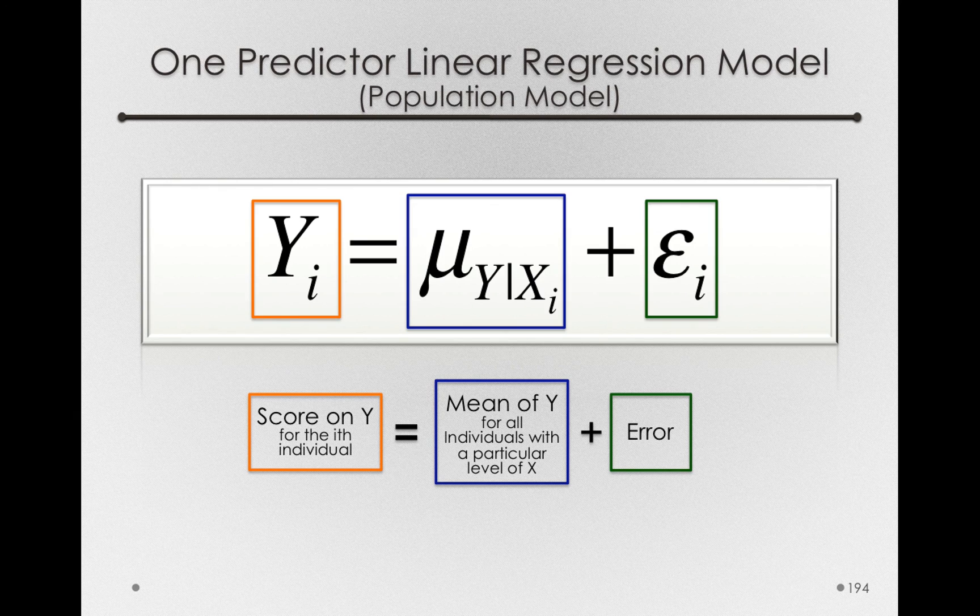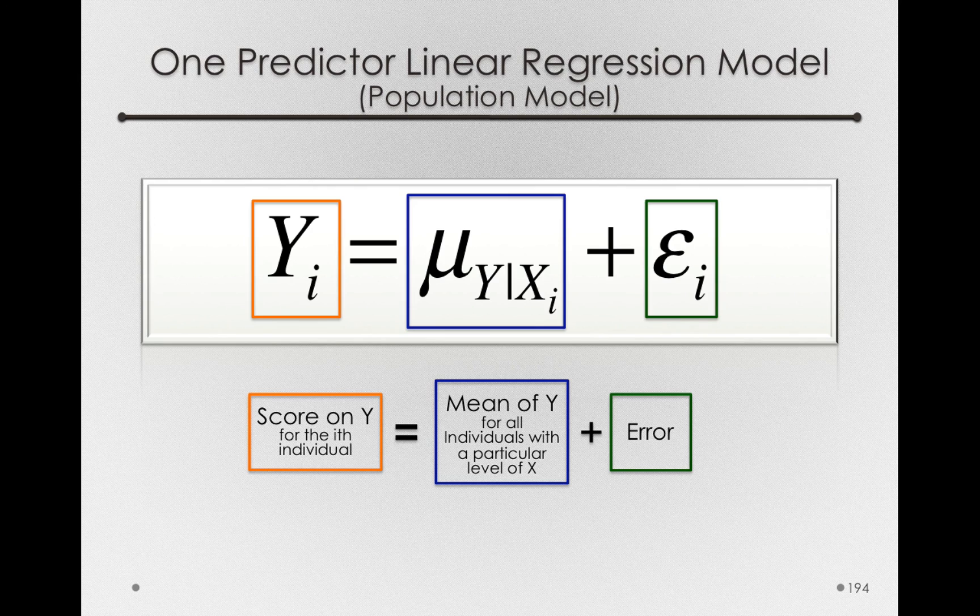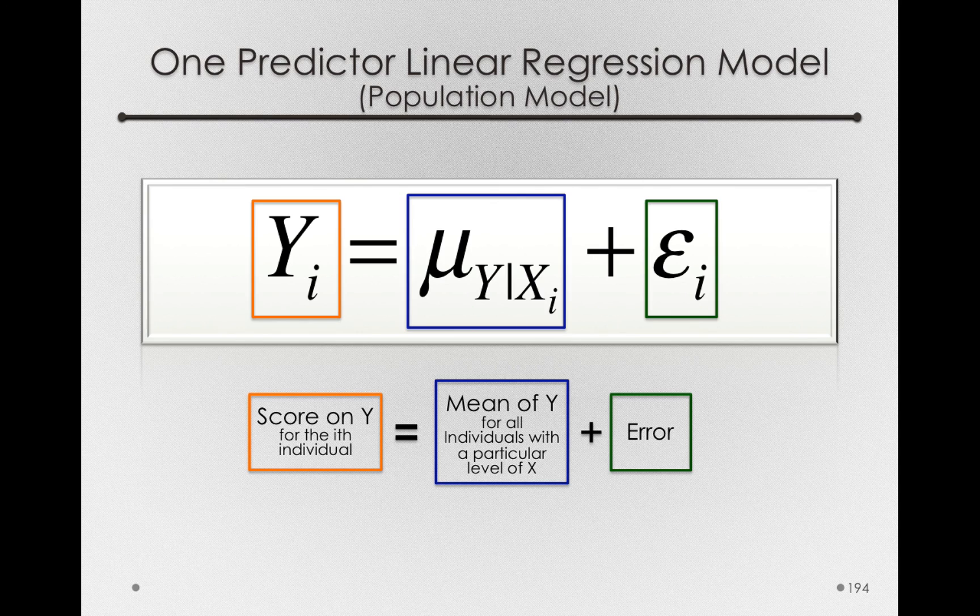But in a one-factor model, the means were of groups that are qualitatively different. But in this case, we have a quantitative x variable and we know something about the relation between our y and x variable in a quantitative way.